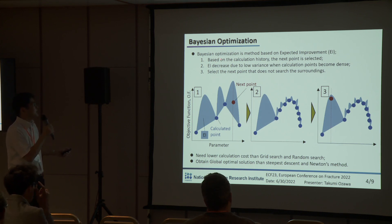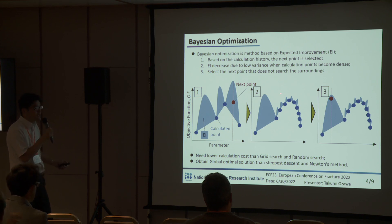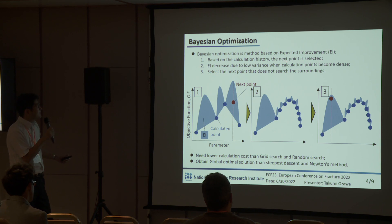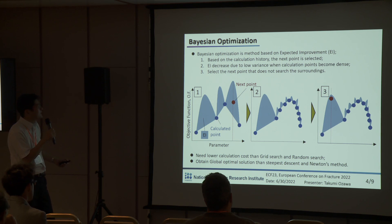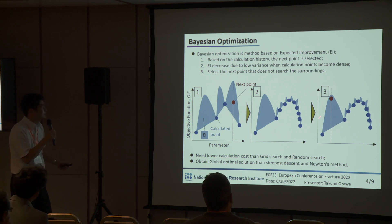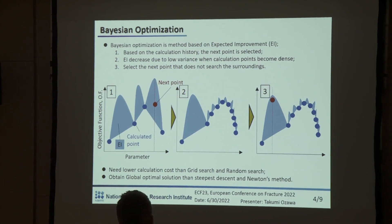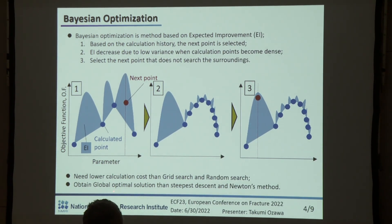This slide shows the content of the Bayesian optimization. Bayesian optimization is a method based on the Expected Improvement (EI). Based on the calculation history, the next point is selected based on EI. After the calculation, EI decreases due to low variance when calculation points become dense, and the Bayesian optimization then selects the next point that does not search the surroundings. It is said that Bayesian optimization requires lower calculation costs than grid search and random search, and can obtain a global optimal solution better than steepest descent and Newton's method.